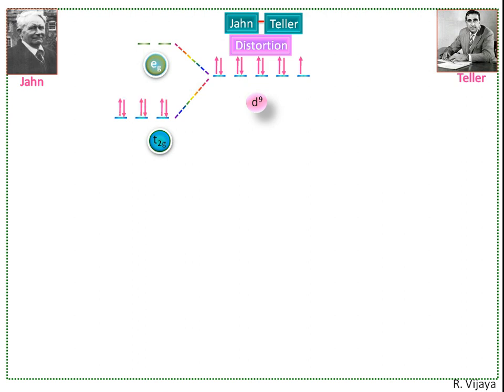Jahn-Teller distortion occurs when the degeneracy is broken by the stabilization of the d orbitals with the z component, while the orbitals without z component are destabilized.